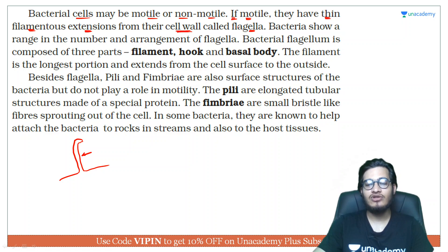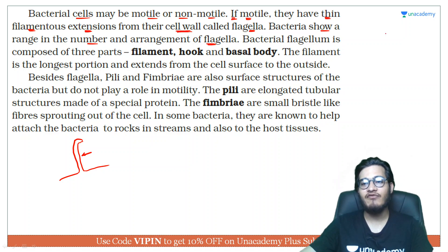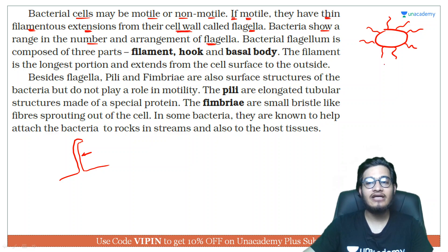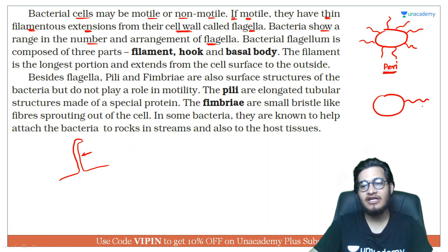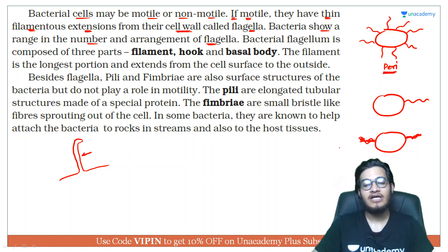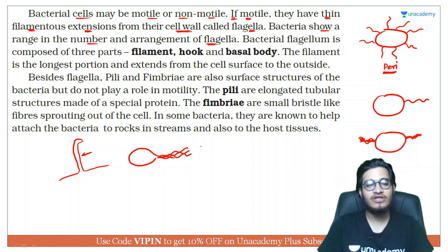Bacteria show variation in the number and arrangement of flagella. For example, in E. coli, flagella are present all around the cell — this arrangement is called peritrichous. Sometimes there is only one flagellum — that is the monotrichous condition. When flagella are present at both ends, it is called amphitrichous. When there is a tuft or cluster of flagella at one end, it is called lophotrichous. So the number and arrangement of flagella can vary.